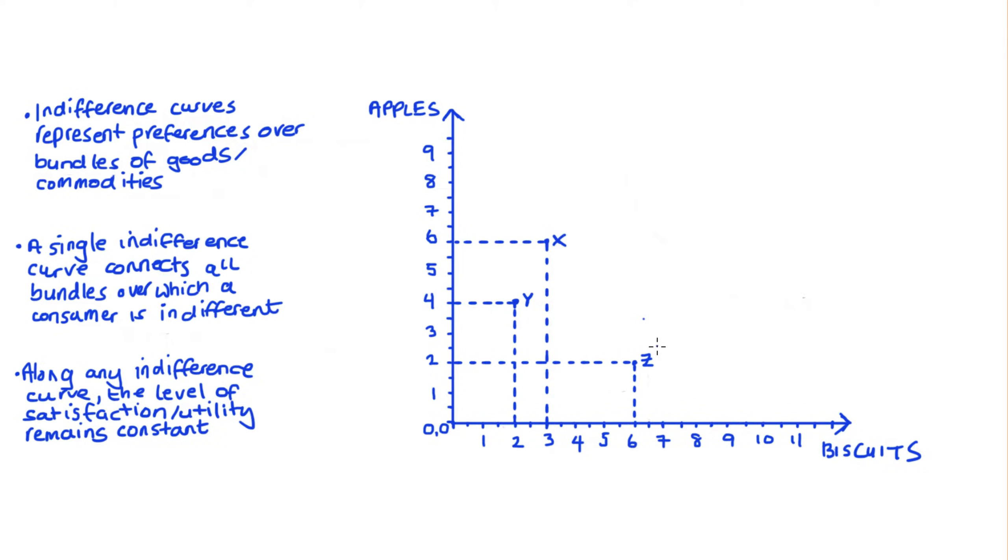Now just to clarify what this means. Well, if this was the case, I would get the same level of satisfaction from consuming bundle X, which is three biscuits and six apples, that I would get if I had consumed bundle Z, which is six biscuits and two apples. I wouldn't care which bundle X or Z I got if I had to choose. Now if that was the case, then X and Z would be on the same indifference curve.